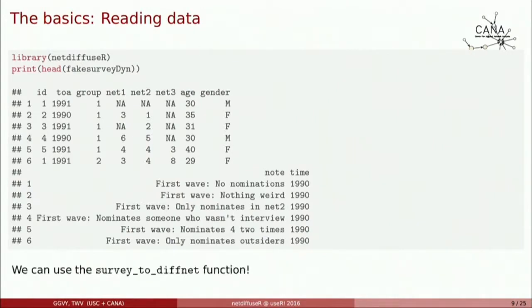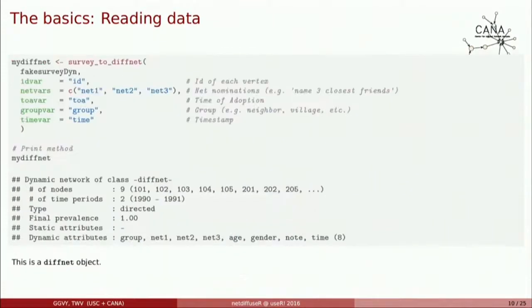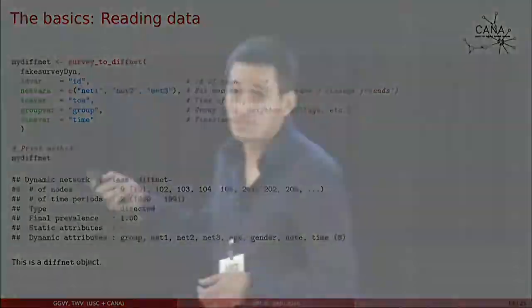With this data, you can use the survey-to-diffnet function, and it's as easy as this. You just point to NetDiffuser's data frame, identify the key columns, and you get a nice DiffNet object — basically a dynamic graph with attributes. It looks like this: you have a dynamic network that shows you, at a glance, the nodes, the time periods, whether it's directed or not, the final prevalence (the proportion of individuals who adopted the behavior), and any static or dynamic attributes.